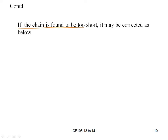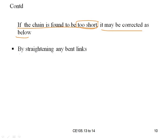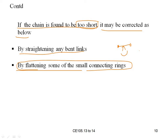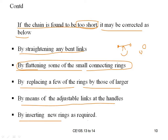If the chain is found to be too short, it may be corrected by: straightening any bent links — if a link is bent, make it straight with the help of hammering; flattening some of the small connecting rings back to circular shape; and replacing a few rings with larger ones, or inserting new rings using the adjustable links at the handles.